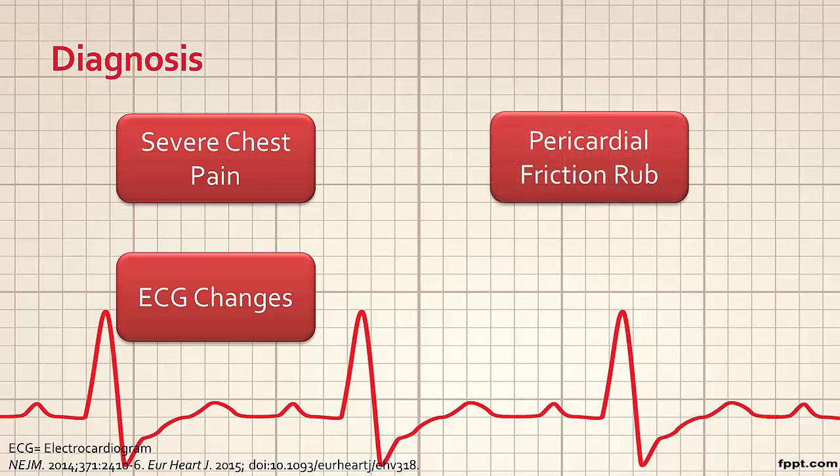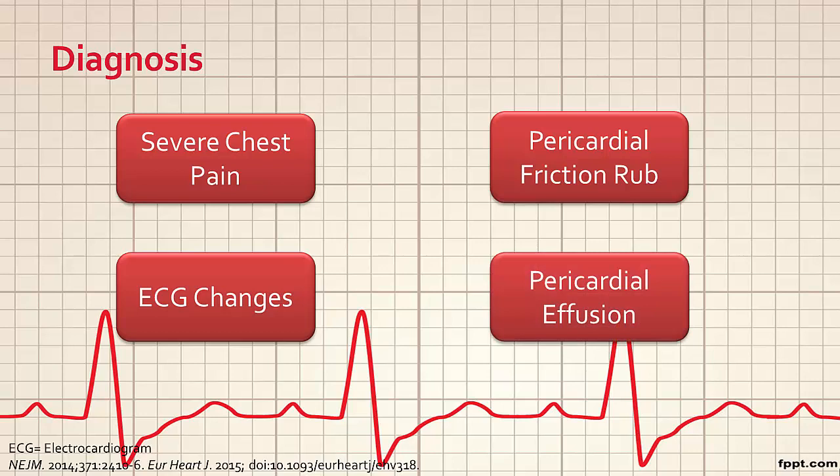The third criteria is a pericardial friction rub, which is a high-pitched, scratchy sound heard on auscultation with a stethoscope, caused by the two pericardial layers rubbing against each other. In recent studies, only about one-third of patients present with an audible pericardial friction rub.